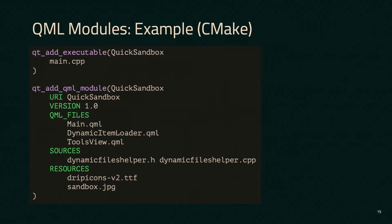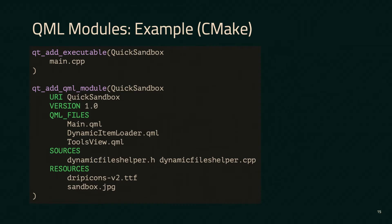Here's an example of how that actually looks in CMake. This is a simple C++ application where I'm adding an executable for the QQuick sandbox. The module itself is pretty straightforward: the URI property is the thing you import — so `import QQuickSandbox`. Versions are optional in the actual import, but this is the version of the module. You have a section for the QML files themselves — pure QML — and a sources section for C++ files exposing types to the QML module, which would have the QML_ELEMENT macro. And then a resources section for assets like fonts and images bundled with the module.